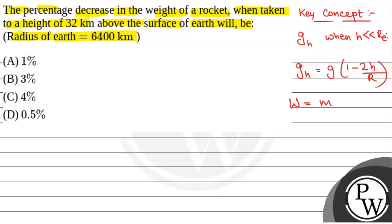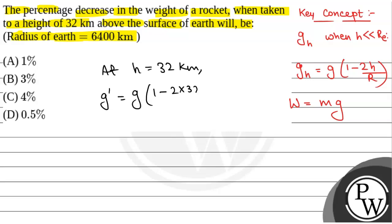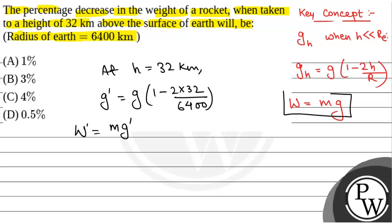We know that the weight of a particle is given by m × g, where g is the acceleration due to gravity. So at height h equal to 32 km, we will have g' equal to g × (1 - 2 × 32 / 6400). So this will be g'. Weight at height will be w' = m × g', and at the surface of the Earth weight will be m × g.